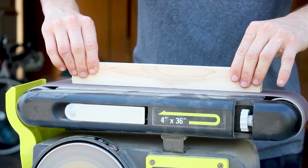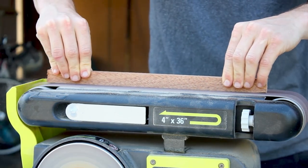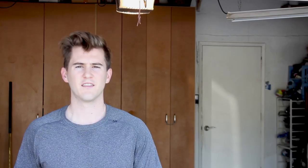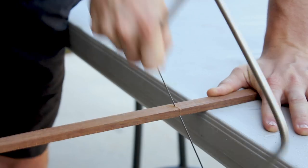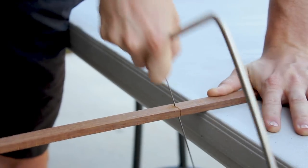So the first thing I'm going to do is just clean up all of the edges on the belt sander. Then I'm going to cut everything to length, maybe about 11 or 12 inches. Then I'm going to glue everything up.